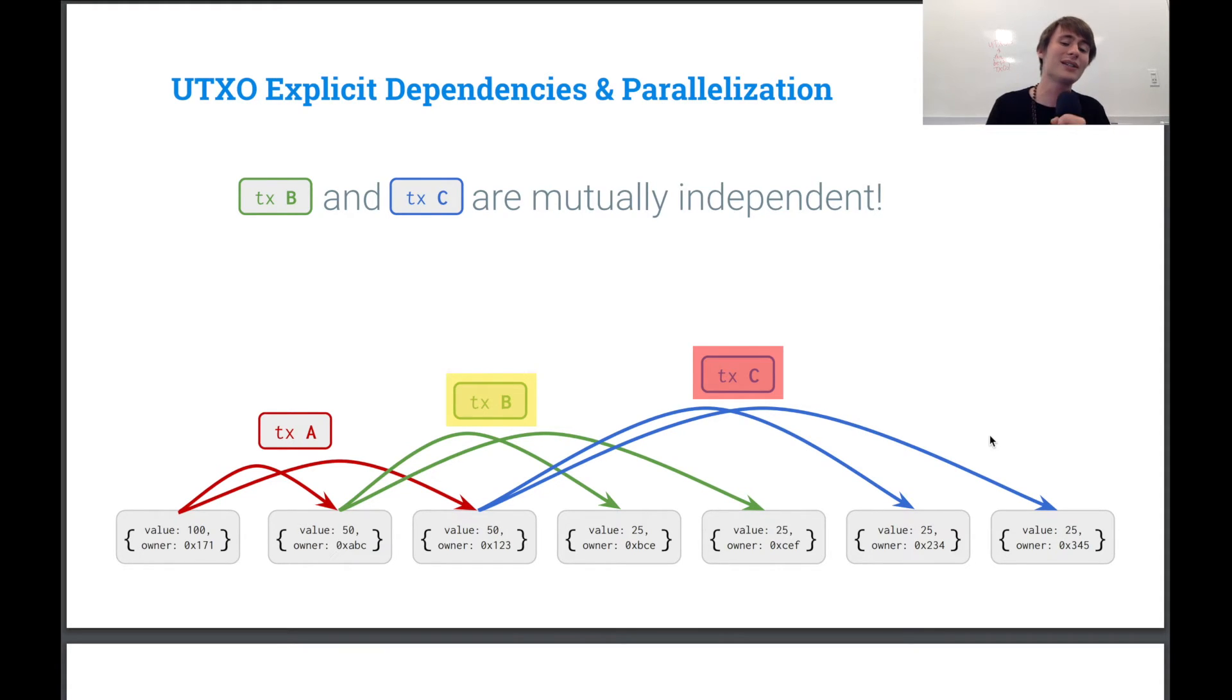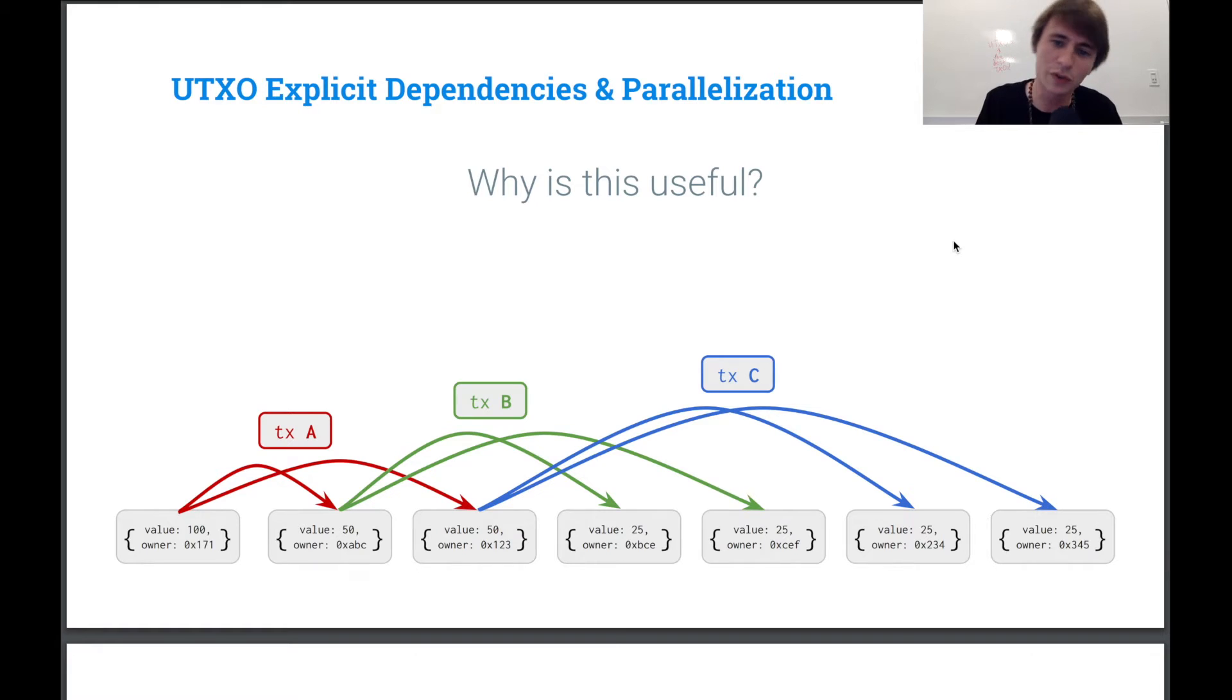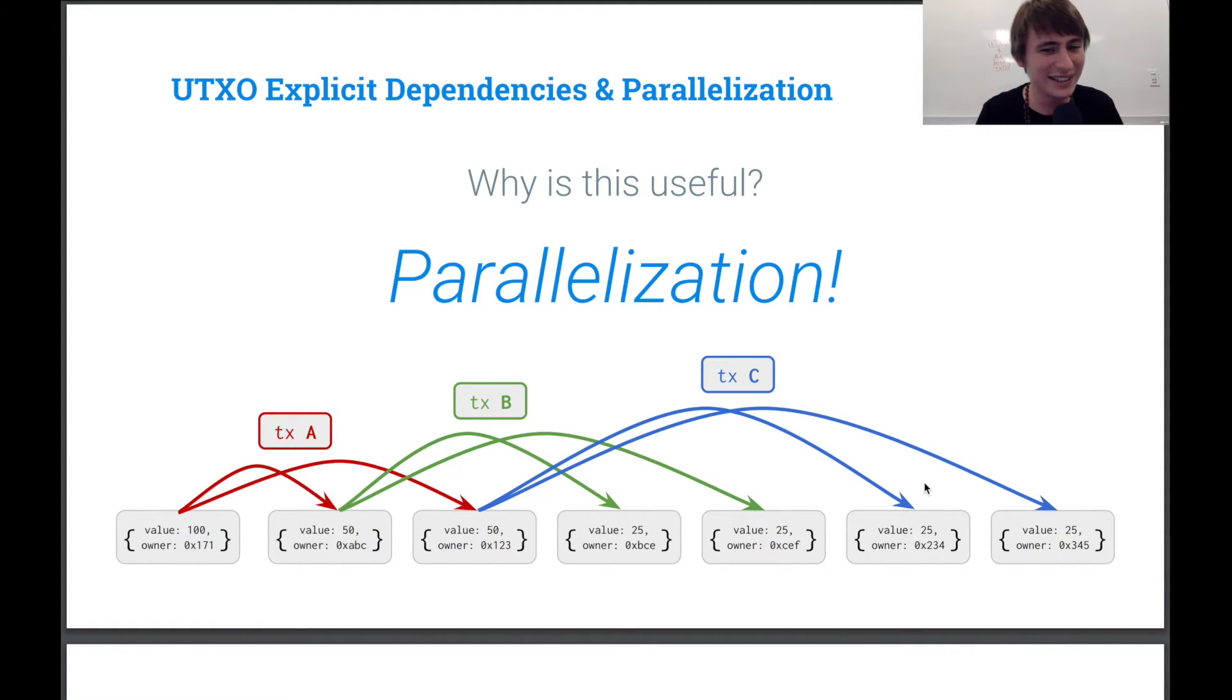And C does not actually depend on B. These two are mutually exclusive because they're spending completely separate UTXOs. And so you can see that they are going to run independently of one another. And so when we do sign a UTXO, we're really explicitly specifying what we are relying on. And this is what I mean by explicit dependencies. Now, why is this useful?